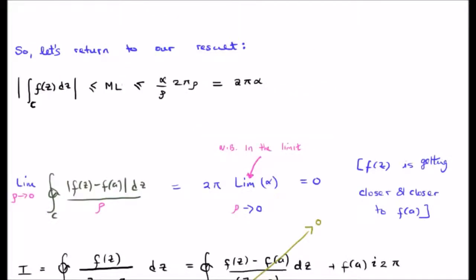Let's return to our result. The magnitude of our integral is going to be less than or equal to twice pi times alpha, where alpha is just some number.